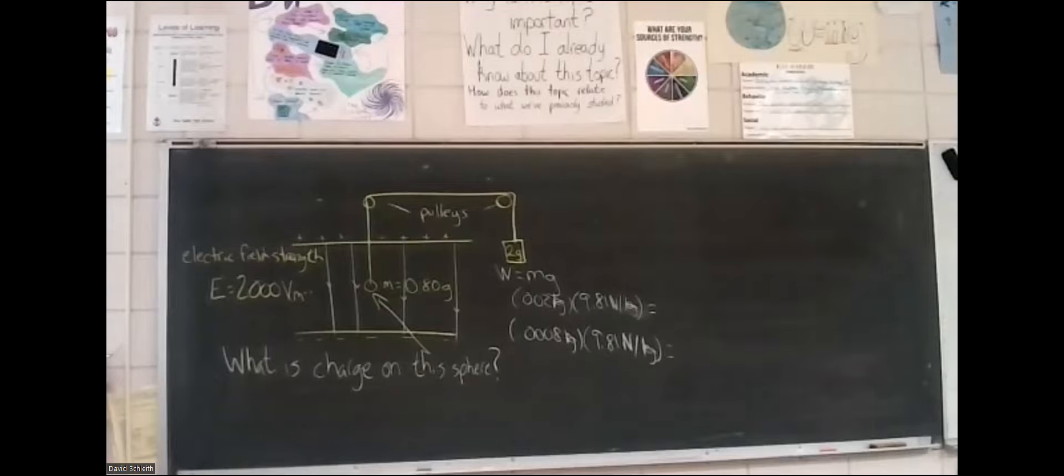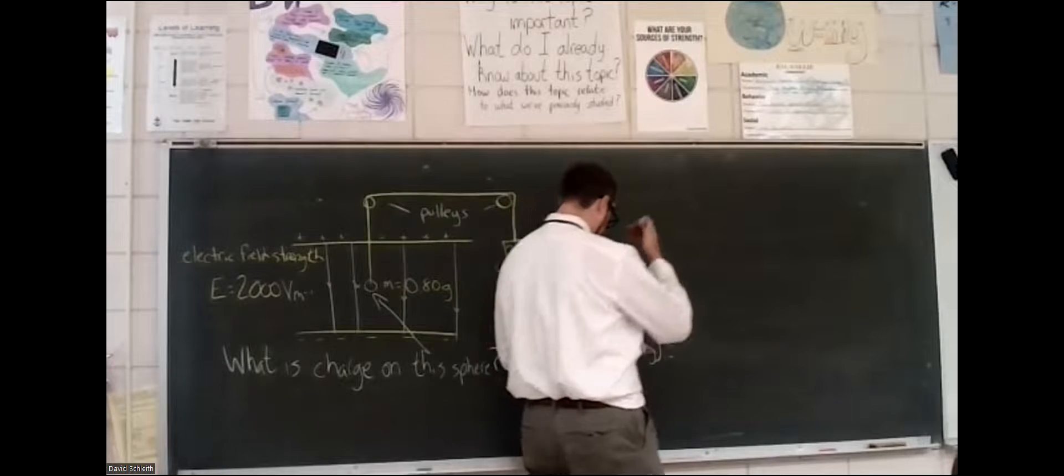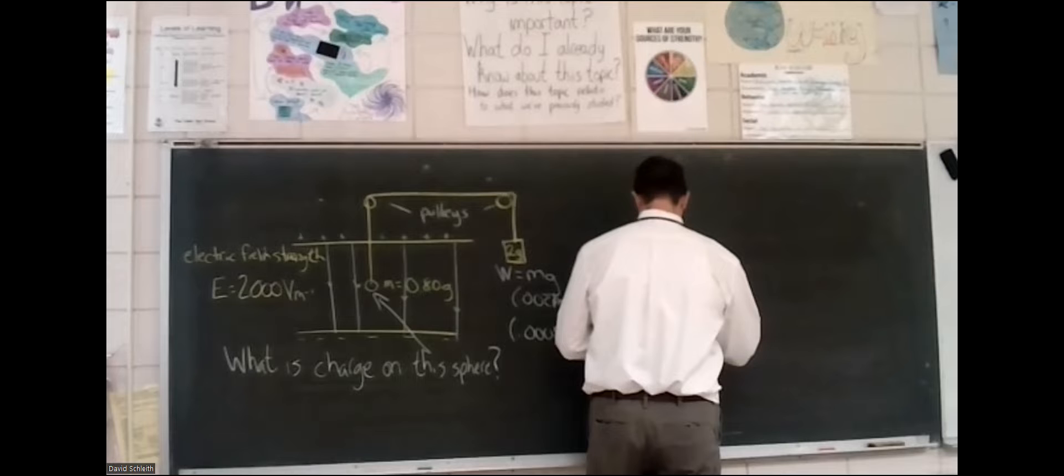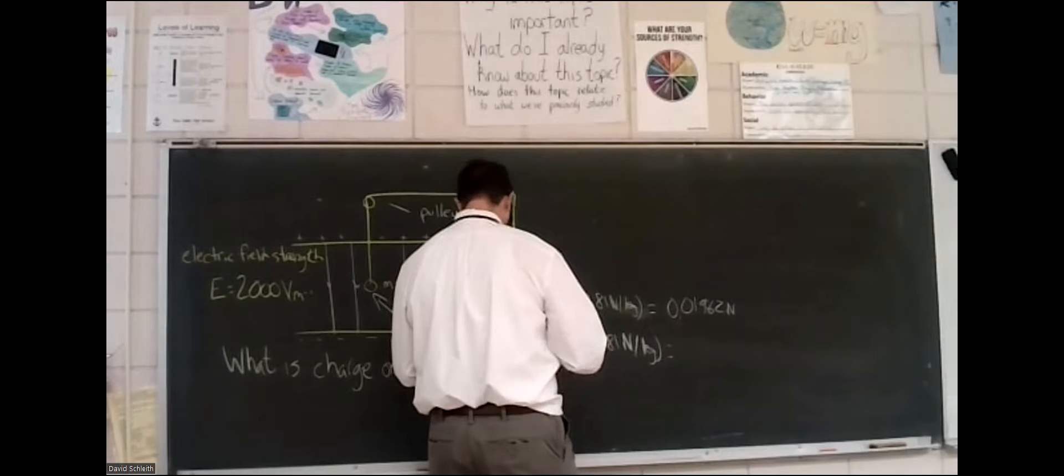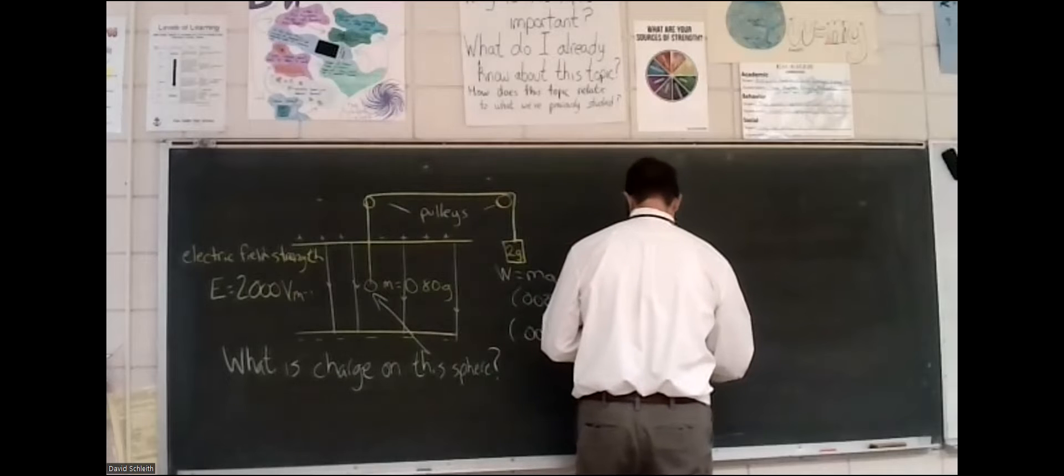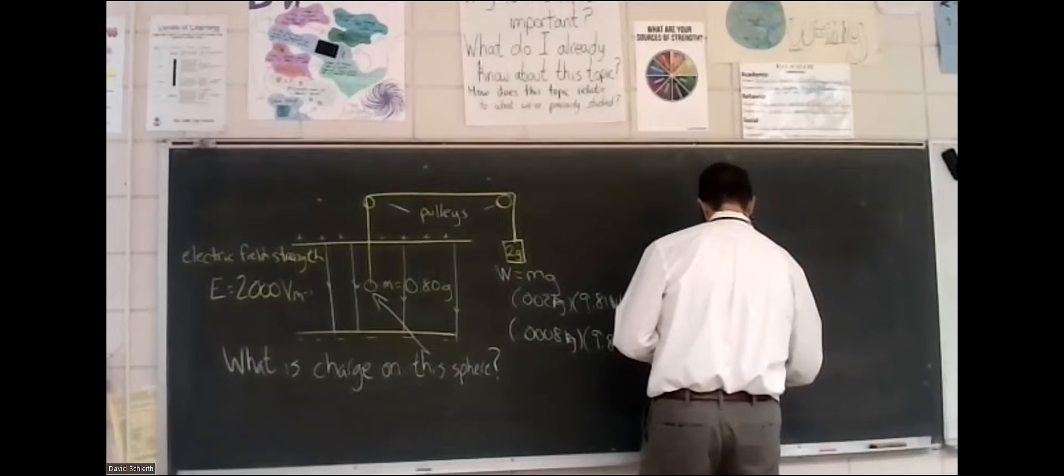So what is 0.002 times 9.81? Well, 9.81 is about 10, so it's about 10 times that. So this number is going to be 0.01962 newtons. If I do some mental math with the other mass there, 0.8 grams converted to kilograms, multiply it by 9.81. That's going to be 0.07848 newtons.